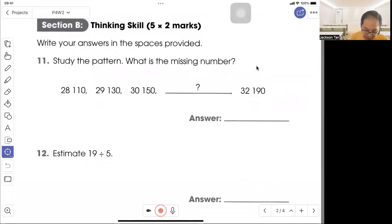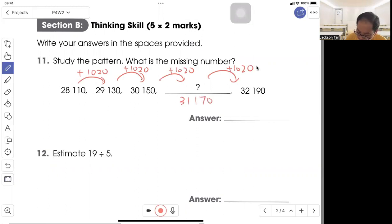Question 11: Study the pattern. What is the missing number? From here to here, you realize it gets bigger. It's plus 1020, then plus 1020, plus 1020. So you get 31170, then 32190. You check and it's right, so it's thirty-one thousand one hundred and seventy.